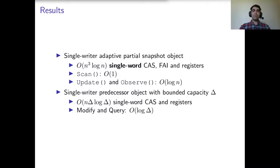We also implemented an efficient single-writer predecessor object with bounded capacity delta, which means that at any point in time, the number of pairs in a predecessor object should be less than delta. This implementation is bounded memory, and the time complexity of each operation is order of log delta. In this video, I only present our adaptive partial snapshot algorithm.